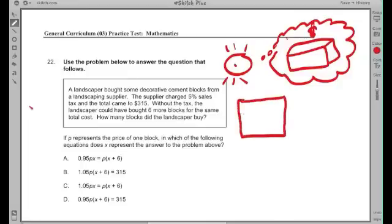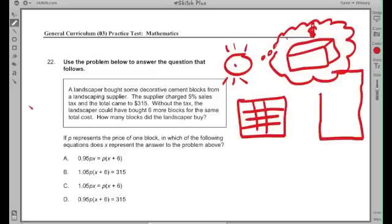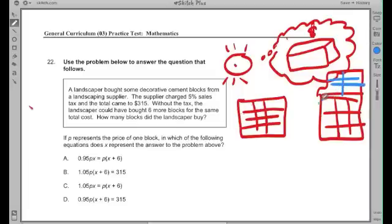The first way: you can go and spend $315, pay tax, and buy a certain amount of blocks for $315. The second way, you're using your imagination now, it looks like you can go to the store and if you don't pay tax, what can you do? Well, you'll be able to get six more blocks.